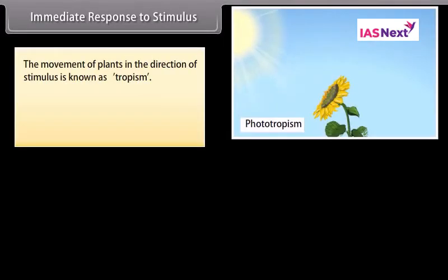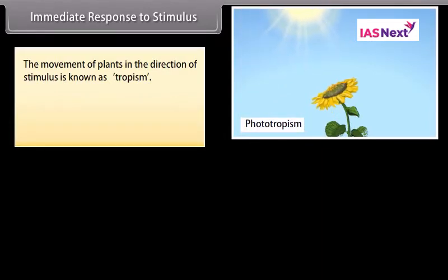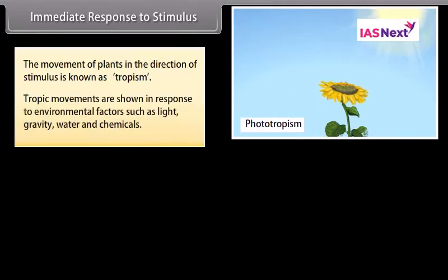Immediate response to stimulus: The movement of plants in the direction of a stimulus is known as tropism. Tropic movements are shown in response to environmental factors such as light, gravity, water and chemicals.